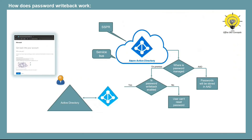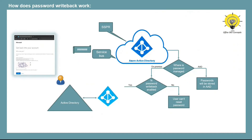If password writeback is running, the user reaches the password reset page. After proving their identity, the user types a new password and clicks submit. The password is then encrypted using the public key created during the password writeback setup, and the encrypted password is sent to the service bus relay of the Azure AD tenant over port 443. Once the message reaches the service bus, the password reset endpoint wakes up, finds the user account using the cloud anchor attribute, and performs the password reset in on-premise Active Directory. If successful, the user is notified; if it fails, the user receives an error.